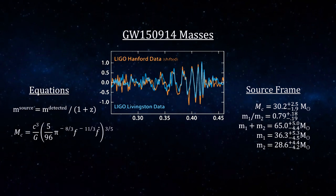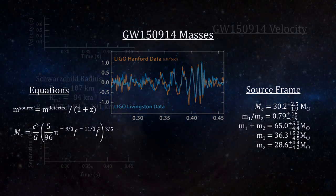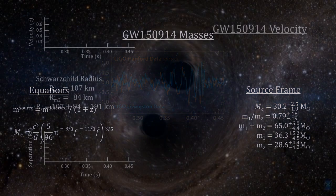These masses are too large for neutron stars that are only a few times the mass of the Sun. So we must be witnessing the merger of two large stellar black holes.